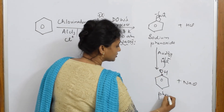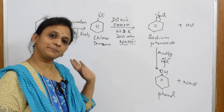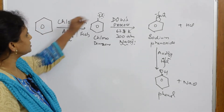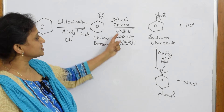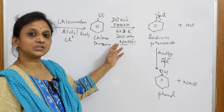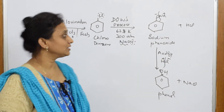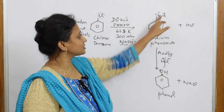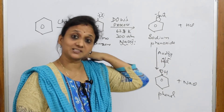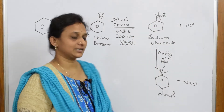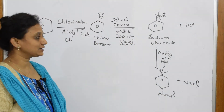To summarize Preparation 1: take benzene, do chlorination to get chlorobenzene, then perform Dow's process (623 K, 300 atm, fuse with NaOH) to convert chlorobenzene to sodium phenoxide. Then acidify with HCl — H⁺ goes in, NaCl comes out, and phenol is prepared. Acidification means introducing H⁺ ions into the reaction so that sodium phenoxide is converted to phenol.